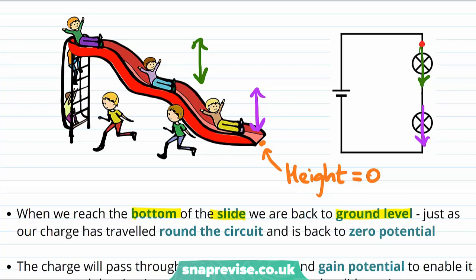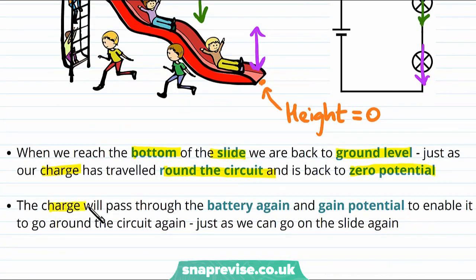If we want to go round the slide again we would have to go back up the ladder. In a similar way, now that our charge has travelled all the way round the circuit it is back to a potential of zero. The charge can pass back through the battery again and gain potential and this would let it go round the circuit again, just how going up the slide would allow us to go around the slide again.